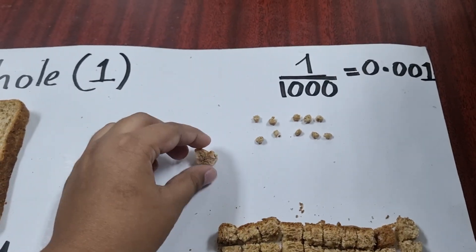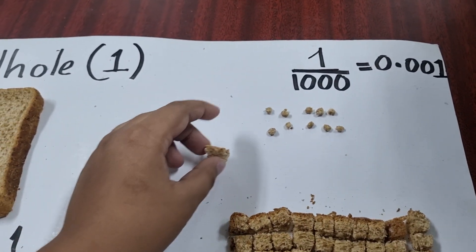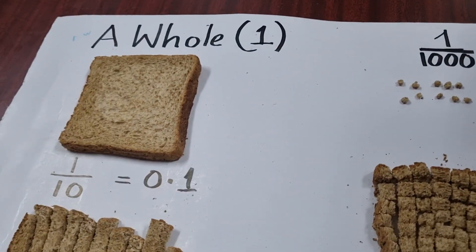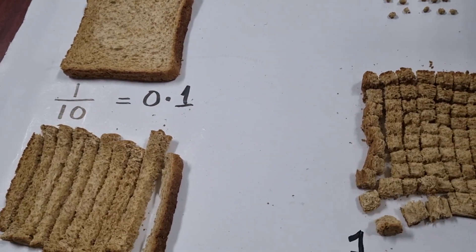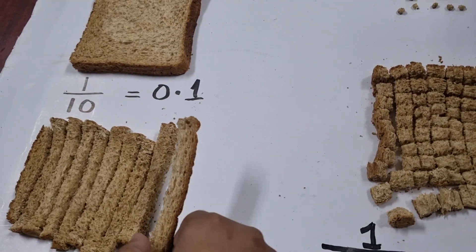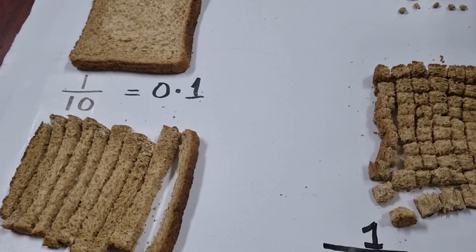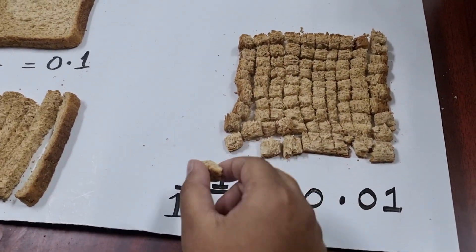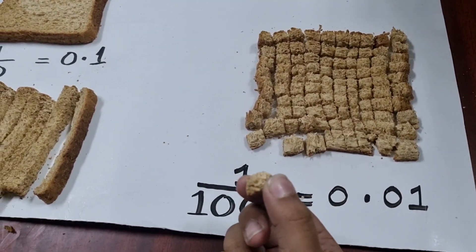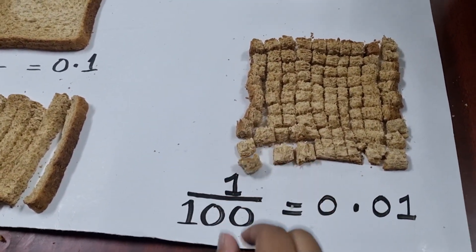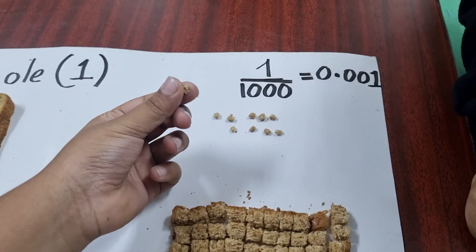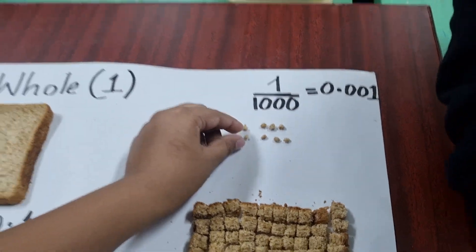Which is the biggest in this? The biggest is whole — one whole. Then smaller is 1 by 10, 0.1. Then comes 0.01. And then comes 0.001.